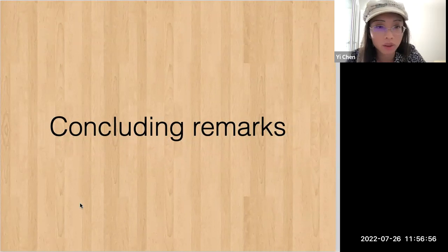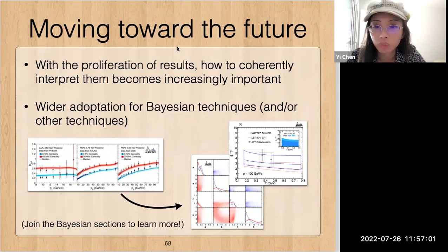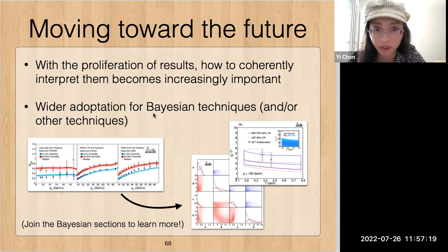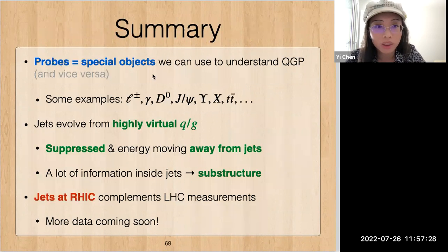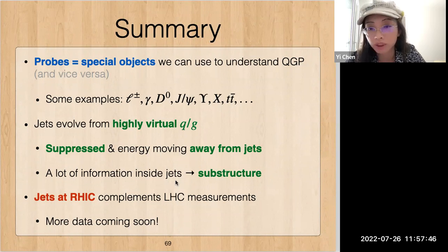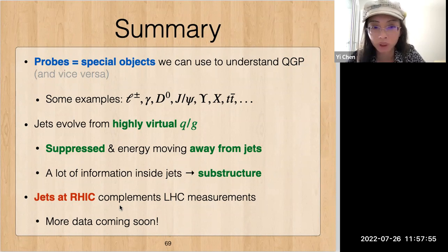To conclude: with the proliferation of results, coherently interpreting them becomes more and more important — this is really a case for wider adoption of Bayesian techniques and related methods. As a summary: probes are special objects we can use to understand the QGP, with examples including photons, leptons, heavy quarks, quarkonia, exotic states, and top quarks. Jets evolved from highly virtual quarks or gluons are suppressed and energy is moved away from the jets. There is a lot of information inside the jets where we can study the substructure. And jets at RHIC complement the LHC measurements with much more data coming soon.